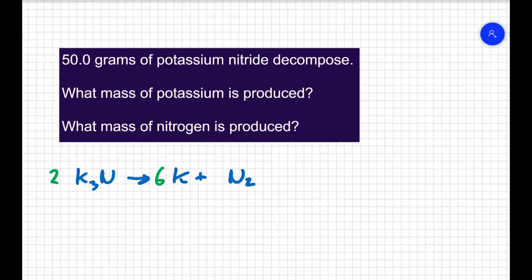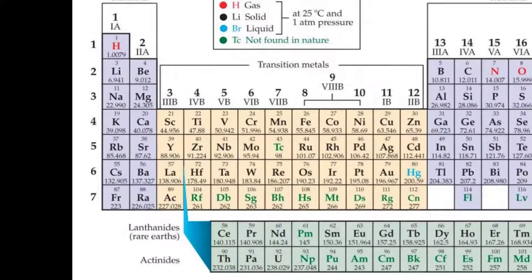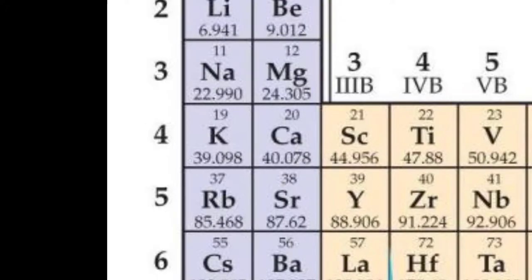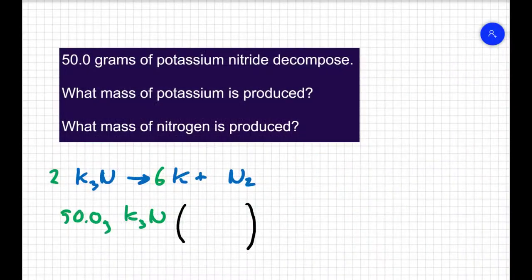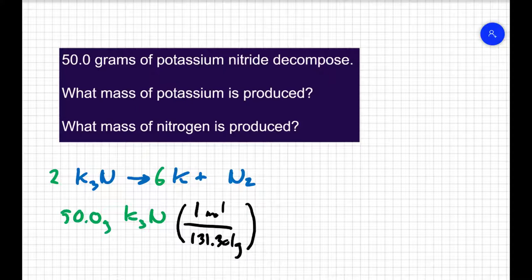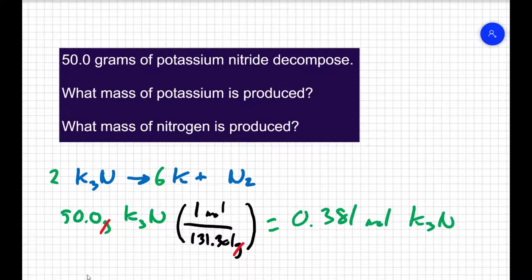I have 50 grams of K3N, and now I need to look up the molar mass of K3N on the periodic table. I have three potassiums with a mass of 39.098 and one nitrogen with a mass of 14.007. So for potassium nitride, one mole is equivalent to 131.301 grams. I can cancel out my grams in my conversion, and I get 0.381 moles of potassium nitride.